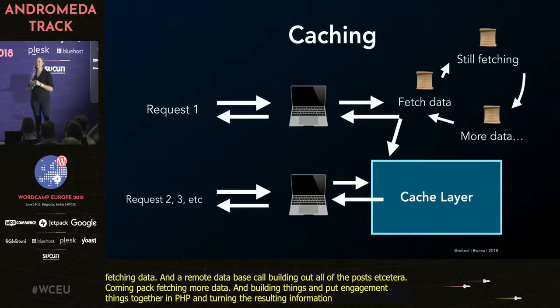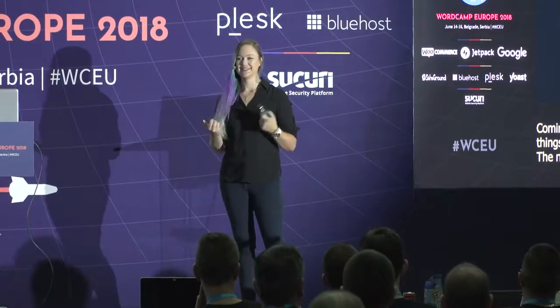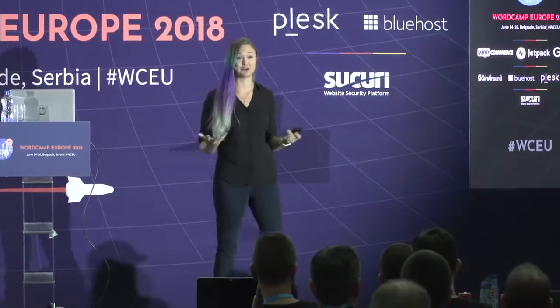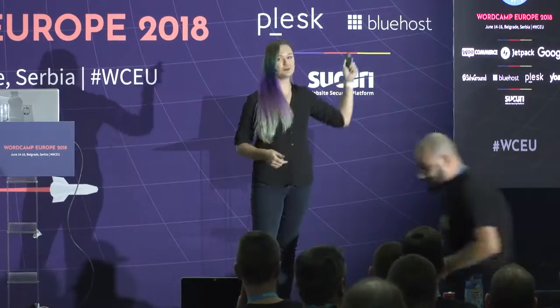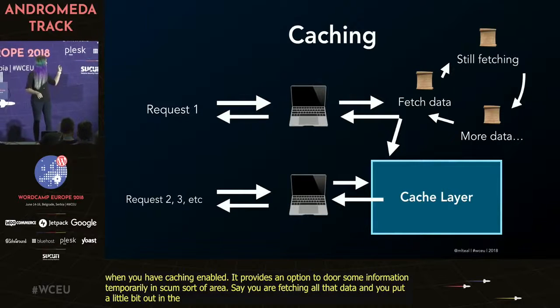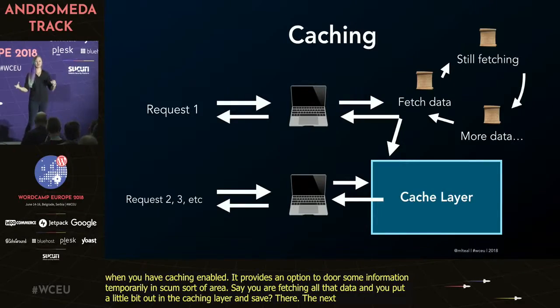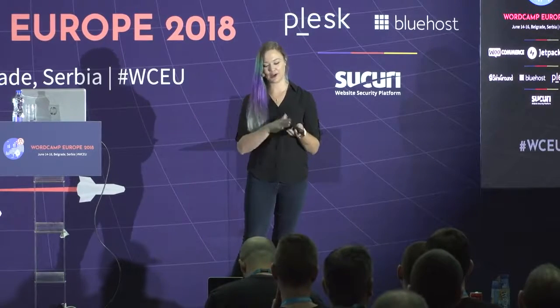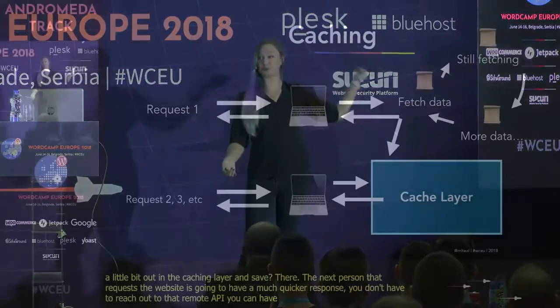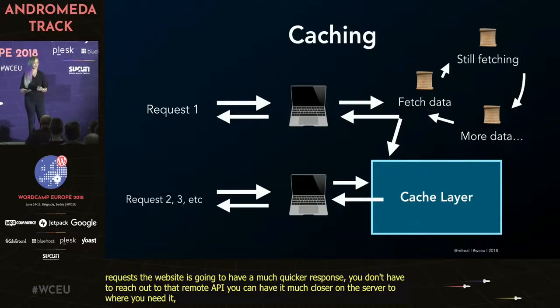The next person comes and requests the site — this is where it gets interesting when you have caching enabled. Caching provides an option to store some information temporarily in a caching layer. Say you're fetching all that data and you put a little bit out in the caching layer. You save it in there. The next person that requests the website is going to have a much quicker response. You don't have to reach all the way out to that remote API — you can look right into a caching layer that's much closer on the server to where you need it.